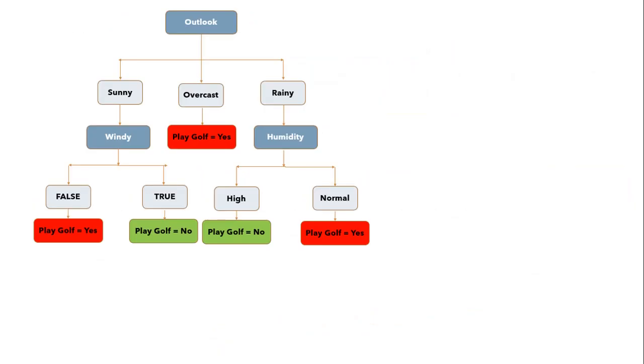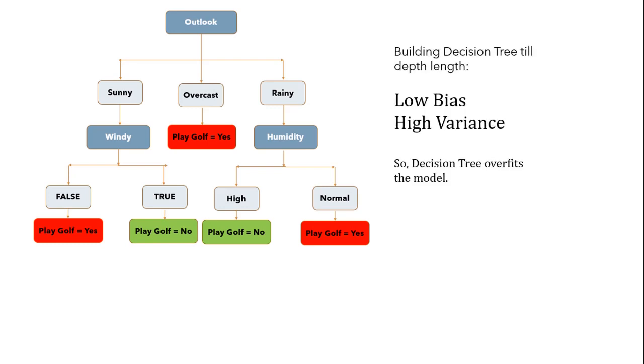So guys, as we already know that when we build decision tree and we go till depth length, their model has low bias and high variance and this will become a case of overfitting where model performs good on training dataset but when we introduce blind data to model, its accuracy decreases exponentially.